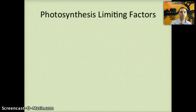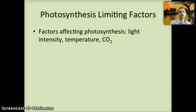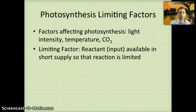A number of different factors can influence the rate of photosynthesis — these are called limiting factors. A limiting factor is a reactant or input available in short supply that limits the reaction. The three key limiting factors for photosynthesis are light intensity, temperature, and CO2, which can each limit how quickly photosynthesis can occur.